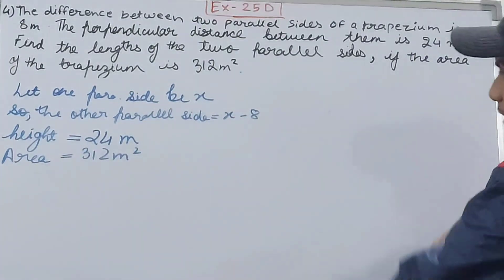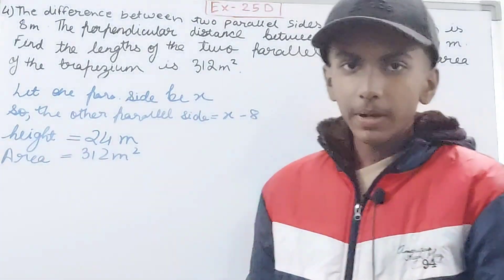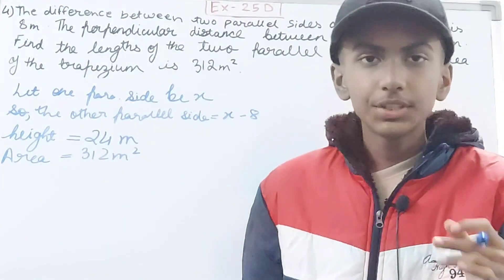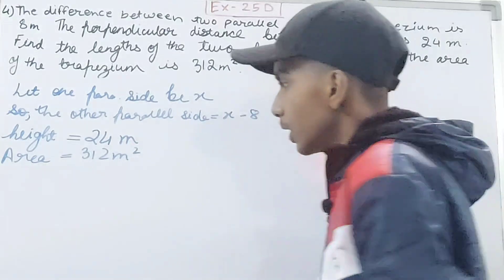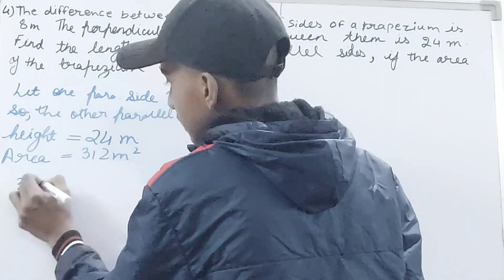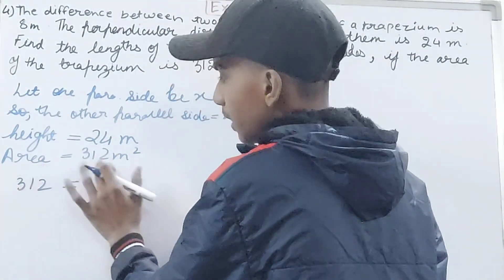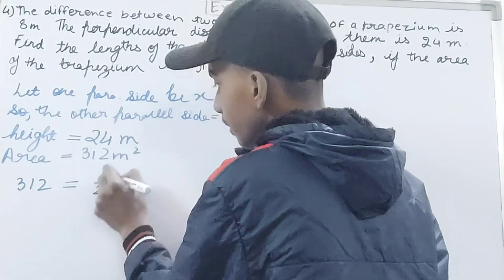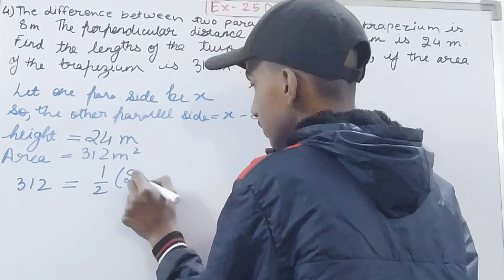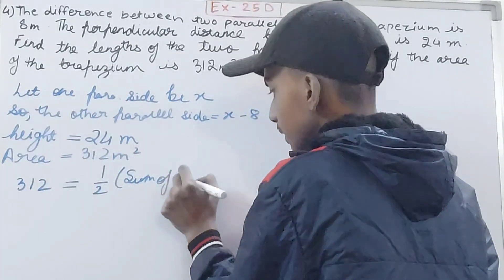Like the previous questions, in place of the area we take the formula of the area. The area is 312, so in place of area I've written 312 equals the formula.